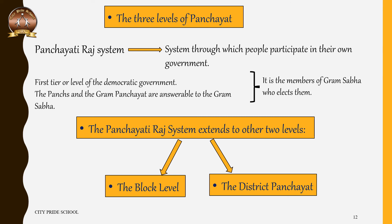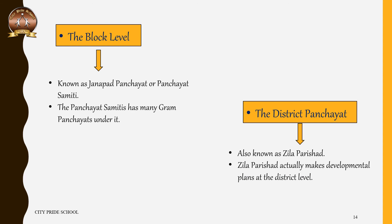One is the block level, which is called Janata Panchayat or Panchayat Samiti. A Panchayat Samiti has many Gram Panchayats under it. Above the Panchayat Samiti, there is a district Panchayat, which is also called Zilla Parishad. The Zilla Parishad makes developmental plans at the district level with the help of Panchayat Samiti. It also regulates the distribution of money among all the Gram Panchayats under it.